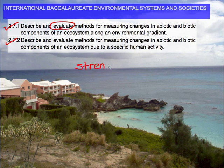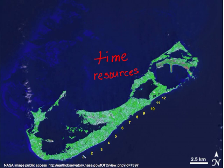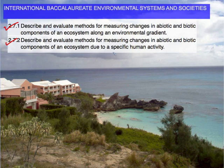Objective 2.7.1 required us to describe and evaluate. The command term 'evaluate' requires us to examine at least three strengths and at least two weaknesses of the method — this would be the beginning of an evaluation. Objective 2.7.2 requires a very similar analysis, but this time with respect to a specific human activity.